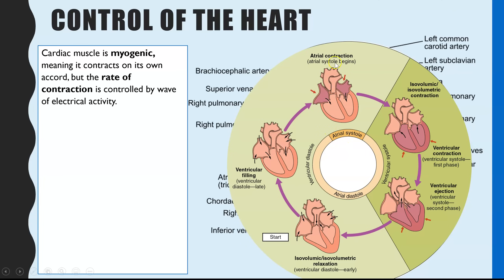What is it that triggers atrial systole — the contracting of the atria? Ventricular systole is the contracting of the ventricles, and then we have diastole, which is when the ventricles and atria both relax. If you can't quite remember this, I'll link my video on the cardiac cycle so you can revise that first.